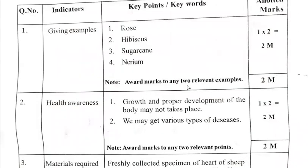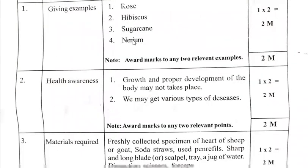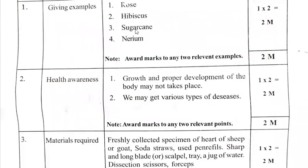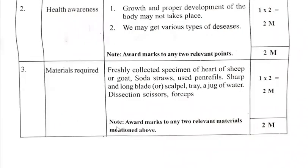Award marks to any two relevant examples. Rose, hibiscus, sugarcane, and nerium are listed — if you write any two of these four, you will get two out of two marks. For materials required, award marks to any two relevant materials mentioned. No need to write all materials — if you wrote any two out of all listed materials, you will get two out of two marks.